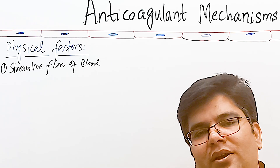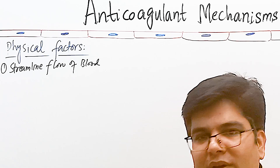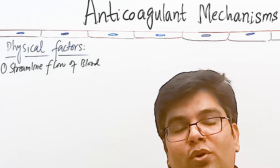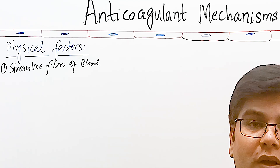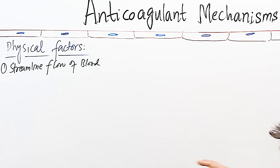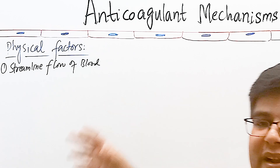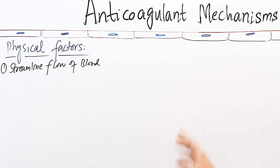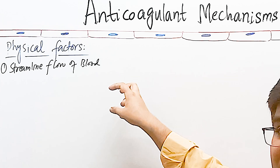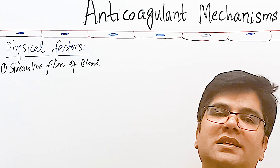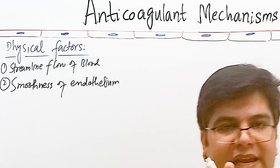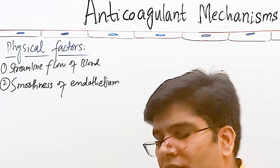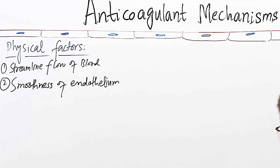Whenever there is stasis of blood — for example if a person is bedridden, having stasis of blood in the leg veins — there is increased risk of blood clot and deep vein thrombosis can occur. Moreover, whenever blood flow becomes turbulent, meaning blood layers flow in different directions, this also increases the risk of injury to the endothelial lining, increasing the chances of clotting factors and platelets coming in contact.